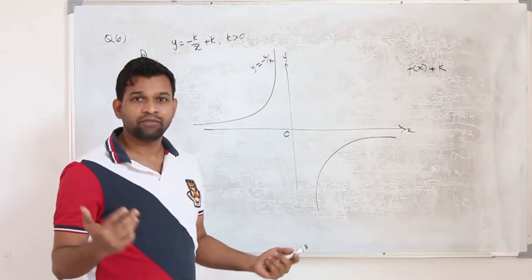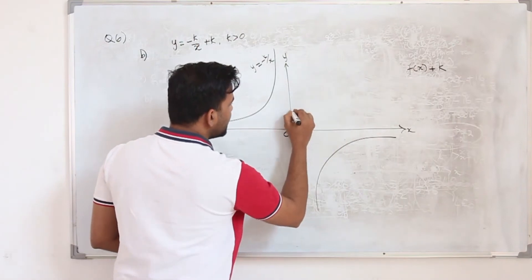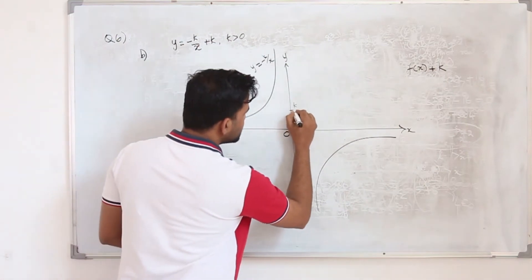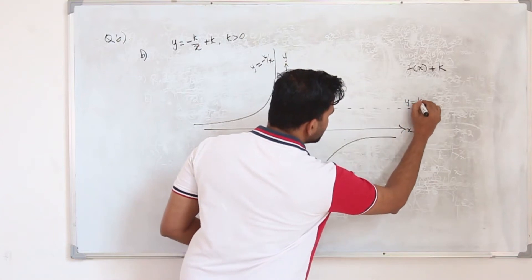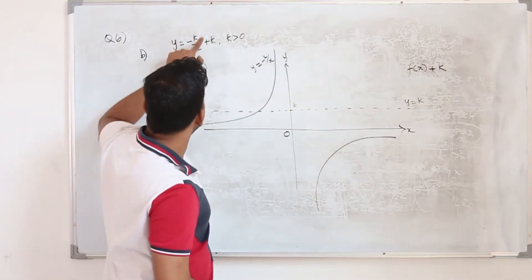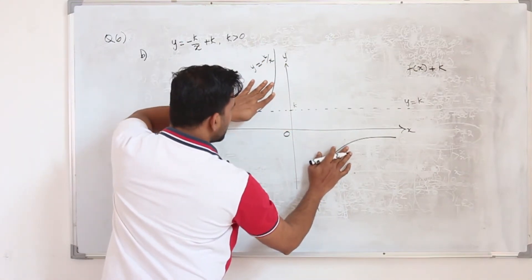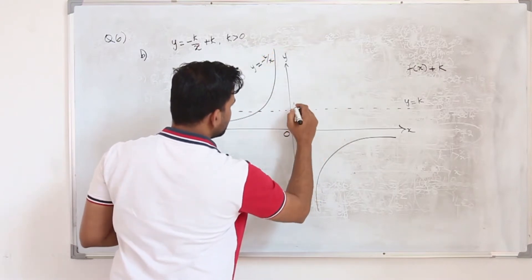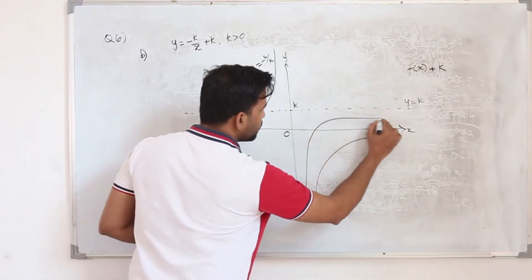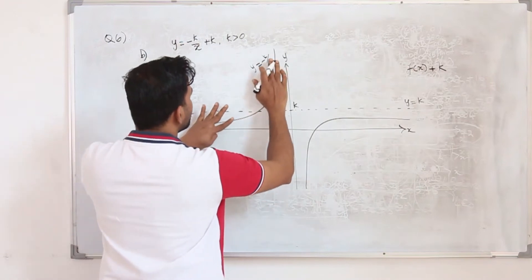We don't know the exact value of k — it can be a fraction like 1/2, 1/4, or 5 — but all we know is it's a positive number. So let's say our k is here; just draw a line at y equals k. Since we want to sketch f(x) plus k, we move the graph of minus k upon x upwards by k units. So this graph will shift up, with y equals k becoming the new horizontal asymptote, and the lower section moves up accordingly.